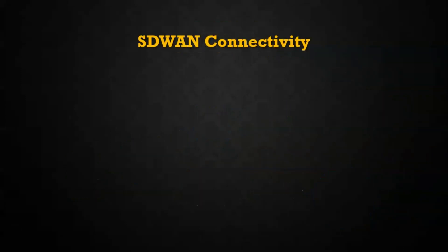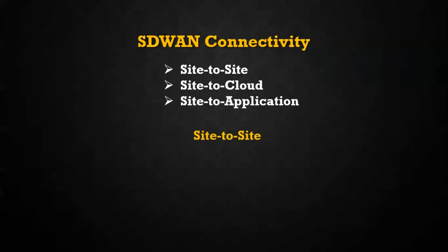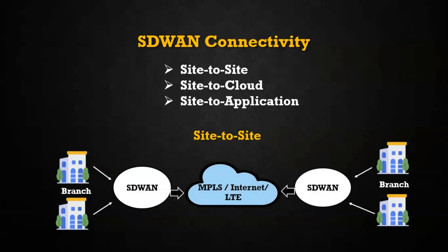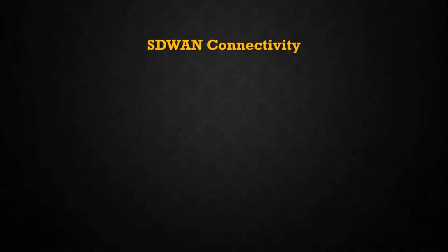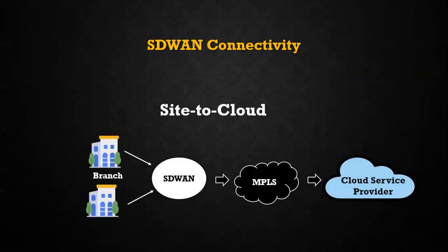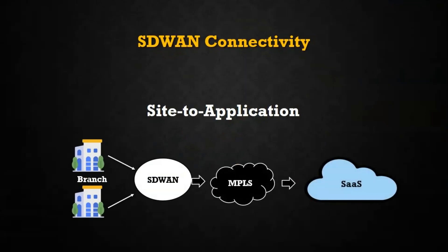In SD-WAN we have a couple of connectivity types: site-to-site, site-to-cloud, and site-to-application. Site-to-site is generally connecting branch to branch — two branch offices communicating over SD-WAN using any internet connection, MPLS, or LTE. Site-to-cloud means a branch has some application hosted in cloud services like AWS or Azure, and the branch office user wants to access that application — using the SD-WAN box we can directly connect to the cloud services. Site-to-application is similar: applications hosted as SaaS (like Salesforce, Microsoft 365, or Office) can all be accessed directly using the SD-WAN box.